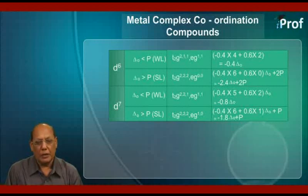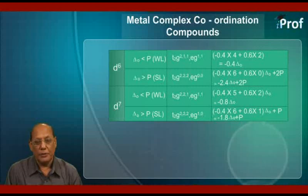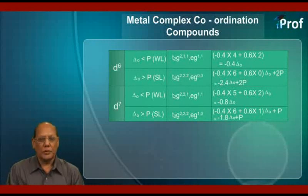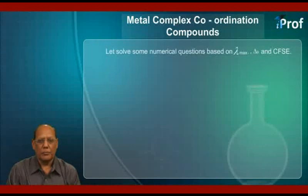Finally, for D7 metal atom or ion configuration, when delta O is less than P, that is for weak ligand, the configuration in the crystal field will be D2G221, EG11, and CFSE is equal to minus 0.8 times delta O. If delta O is more than P, that is for strong ligand, the configuration becomes D2G222, EG10, and CFSE comes out to be minus 1.8 times delta O plus P. Let us now solve some numerical questions based on lambda max, delta O, and CFSE.